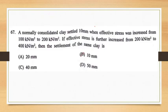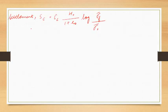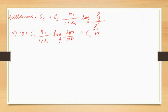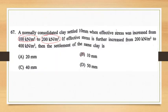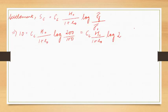In the first case, s_c = 10 mm, σ₀' = 100 kN/m² and σ_f' = 200 kN/m². So we can write: 10 = (c_c × h₀) / (1 + e₀) × log(200/100) = (c_c × h₀) / (1 + e₀) × log 2. In the second case, the initial stress is 200 kN/m² and the final stress is 400 kN/m², so this will again be log(400/200) = log 2. Since all values remain the same and the log term is also log 2, the settlement will also be 10 mm.